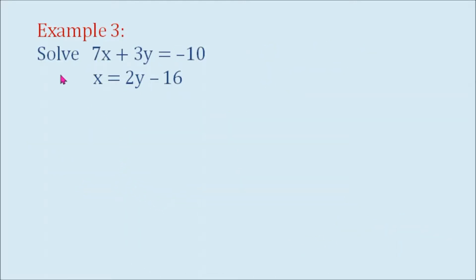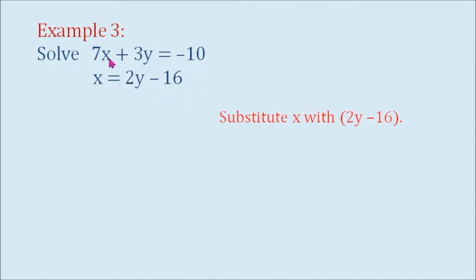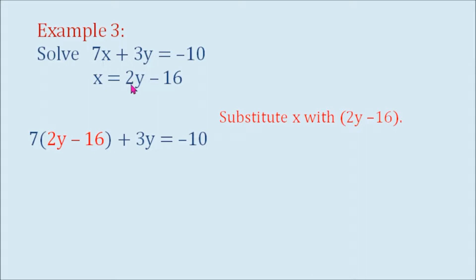Example number 3. Solve 7x plus 3y equals negative 10 and x equals 2y minus 16. On our second equation, x is already isolated on the left side. So we can substitute x in the first equation with 2y minus 16.